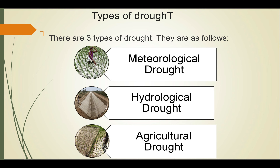Now let's talk about the types of drought. There are three types: first is meteorological drought, second is hydrological drought, and third is agricultural drought. Meteorological drought is expressed solely on the basis of the degree of dryness compared to some normal or average amount, and the duration of the dry period. It is brought about when there is a prolonged period with less than average precipitation. The Indian Meteorological Department has classified drought under three types: mild drought, moderate drought, and severe drought.